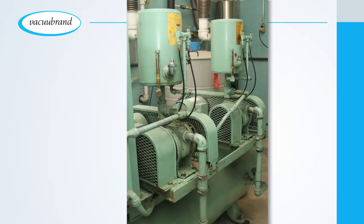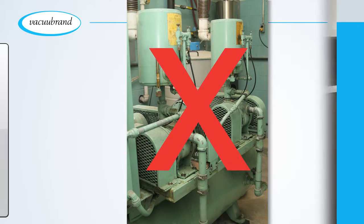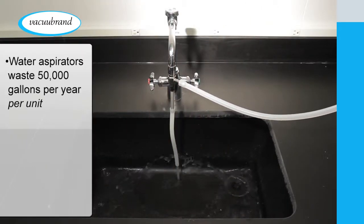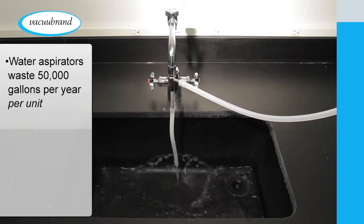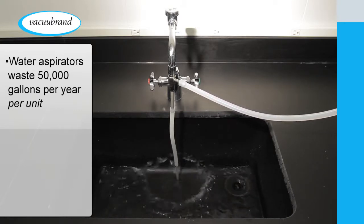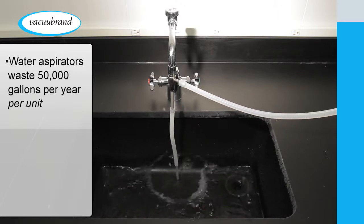For all these reasons, many modern lab buildings are being designed without central vacuum systems. But if central vacuum is headed for extinction, what are your options? Not water aspirators—they can waste and pollute 50,000 gallons of water per year per unit, literally hundreds of thousands of gallons or more in a lab building.